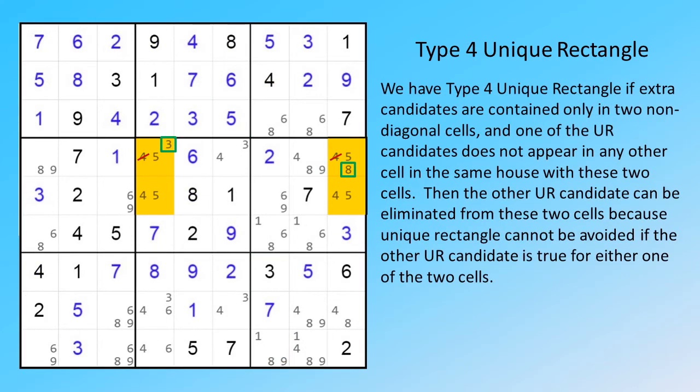We have type 4 unique rectangle if extra candidates are contained only in two non-diagonal cells, and one of the UR candidates does not appear in any other cell in the same house with these two cells. Then the other UR candidate can be eliminated from these two cells, because the unique rectangle cannot be avoided if the other UR candidate is true for either one of the two cells.